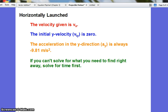We're going to start out simple and work our way into more complex problems. So we start with things launched horizontally. In that case, the velocity given is vₓ.